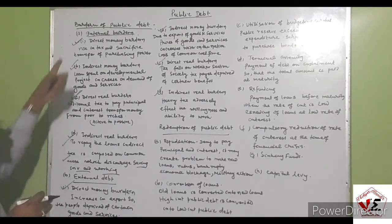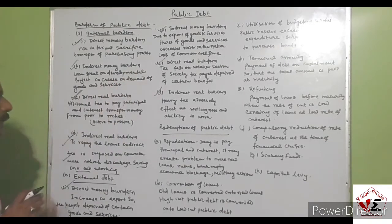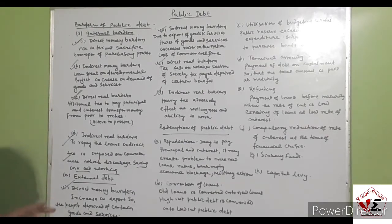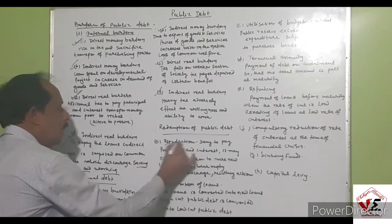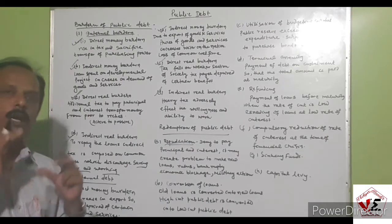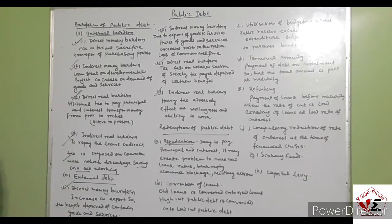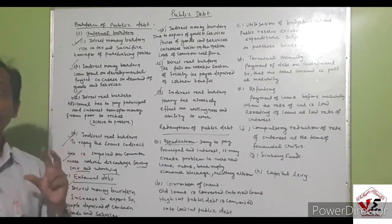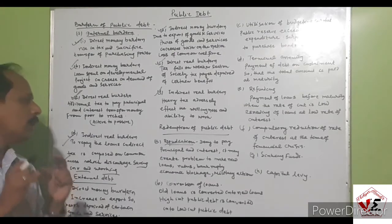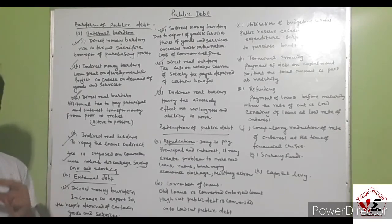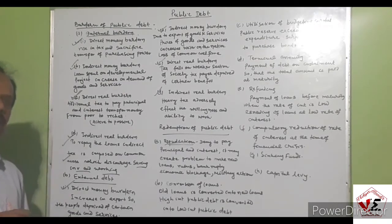Both internal and external debt have their core effects. Now, the redemption of public debt — how can the government repay it? The first method is repudiation, which means the inability or refusal to pay the debt. If a government denies paying the debt, it must make its military very strong. The consequences include: further loans will not be sanctioned, and it becomes impossible to repay the very high principal and interest, creating serious problems for the nation.